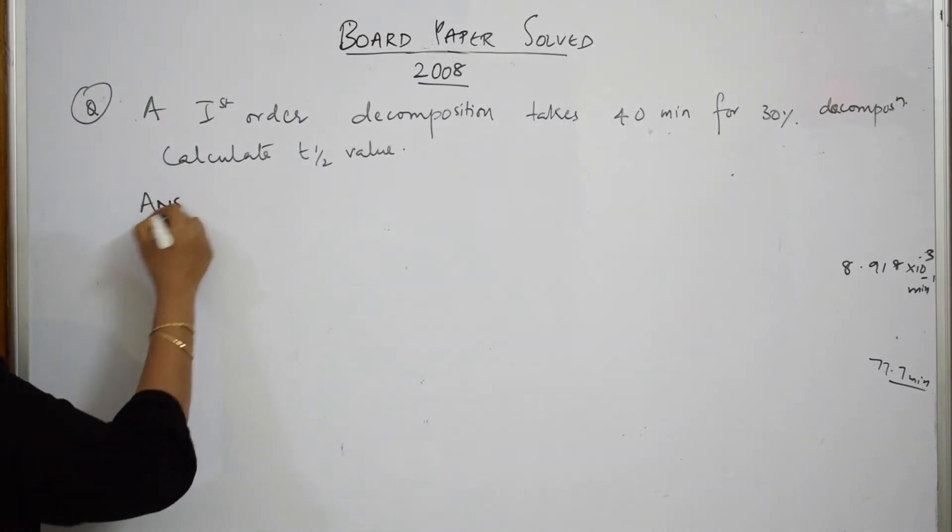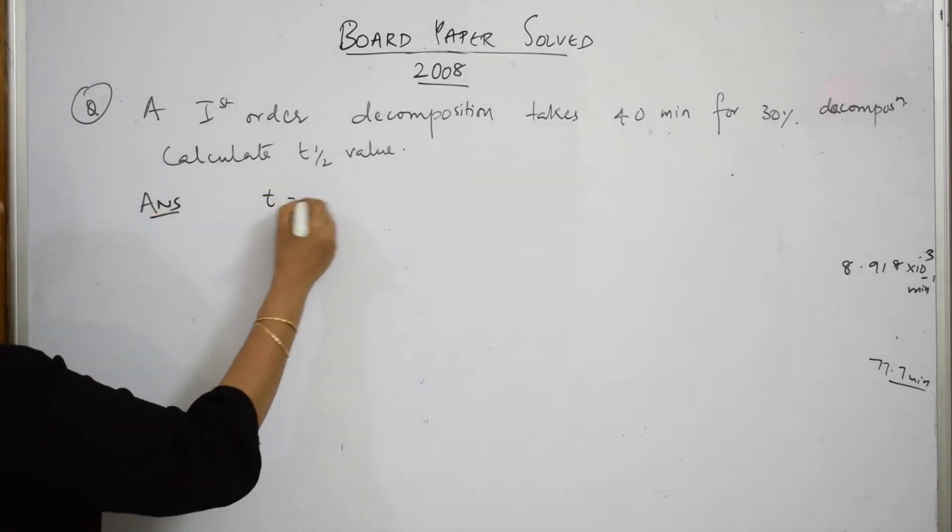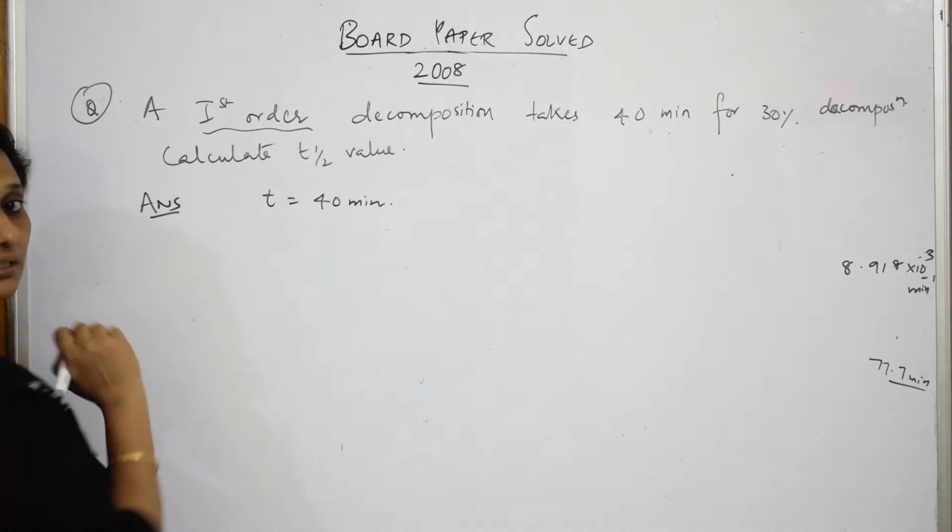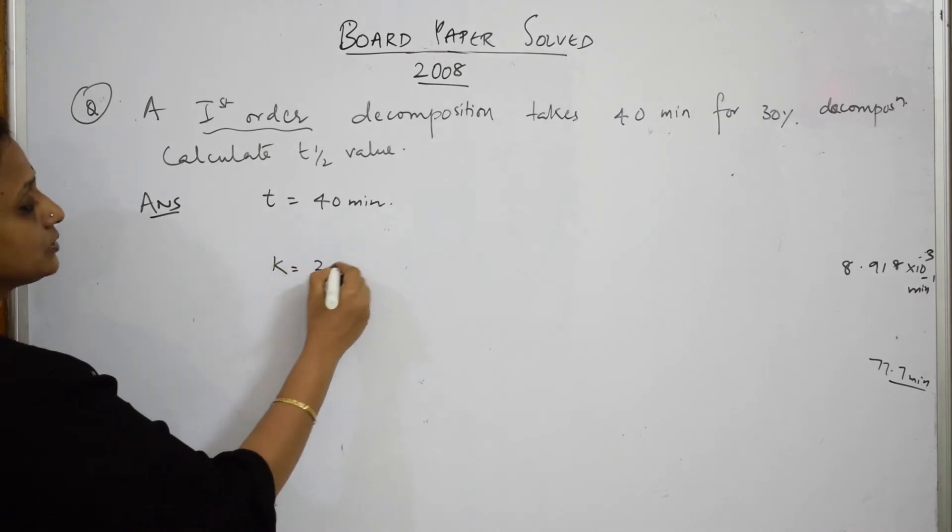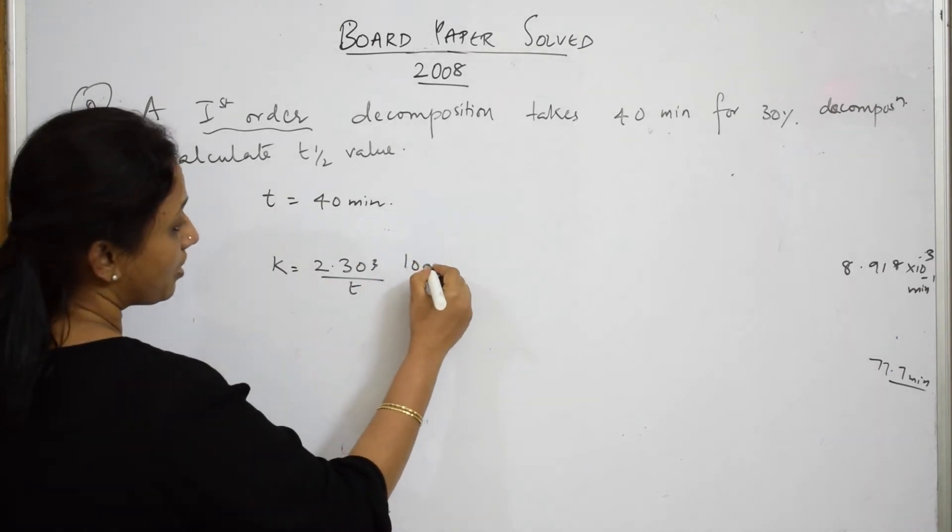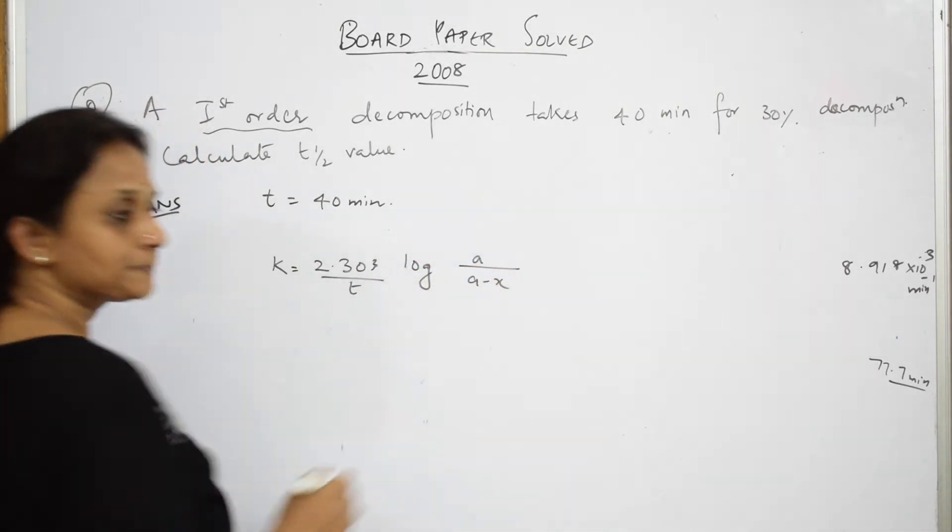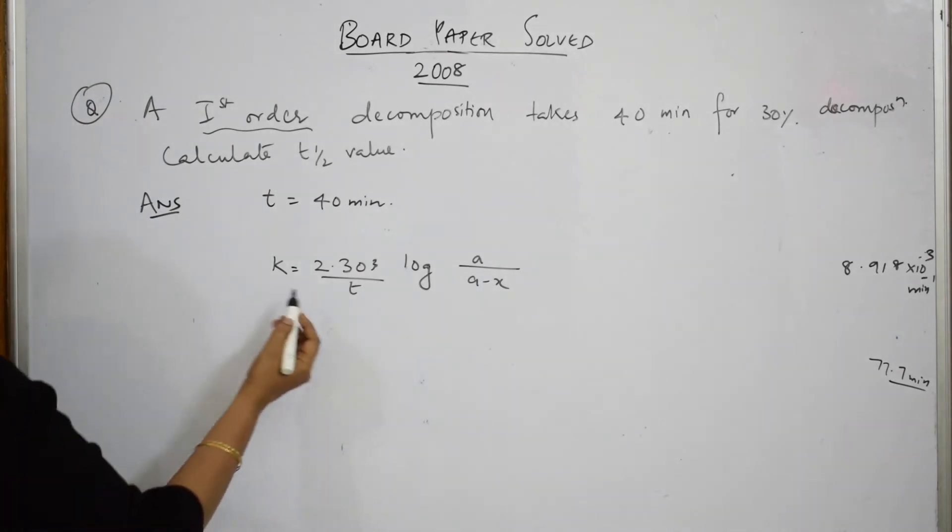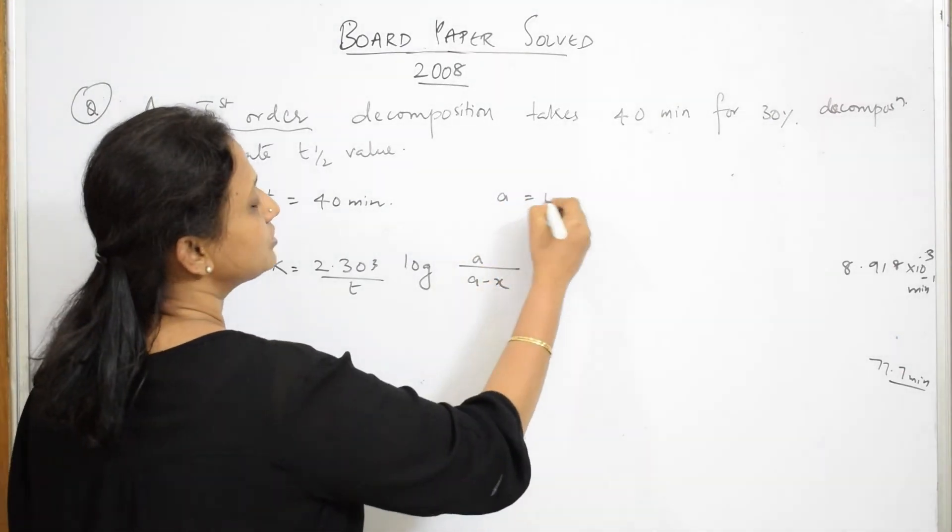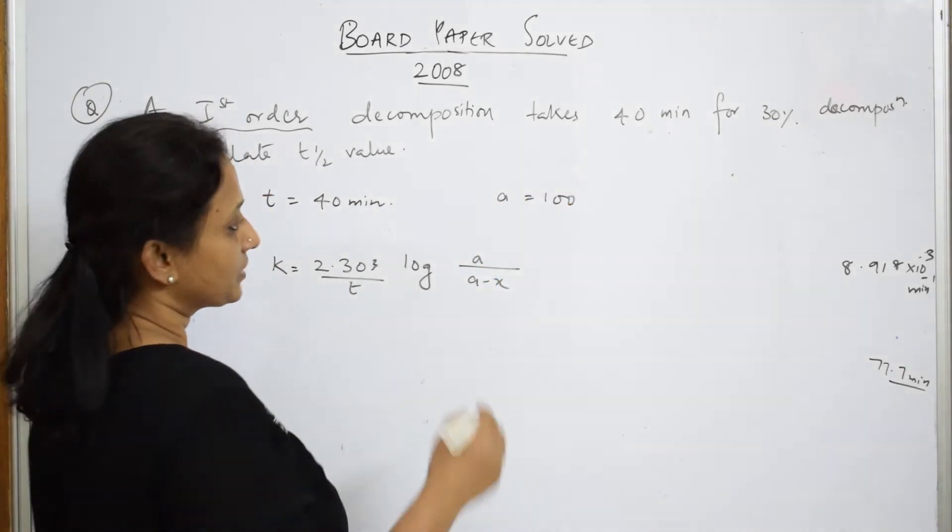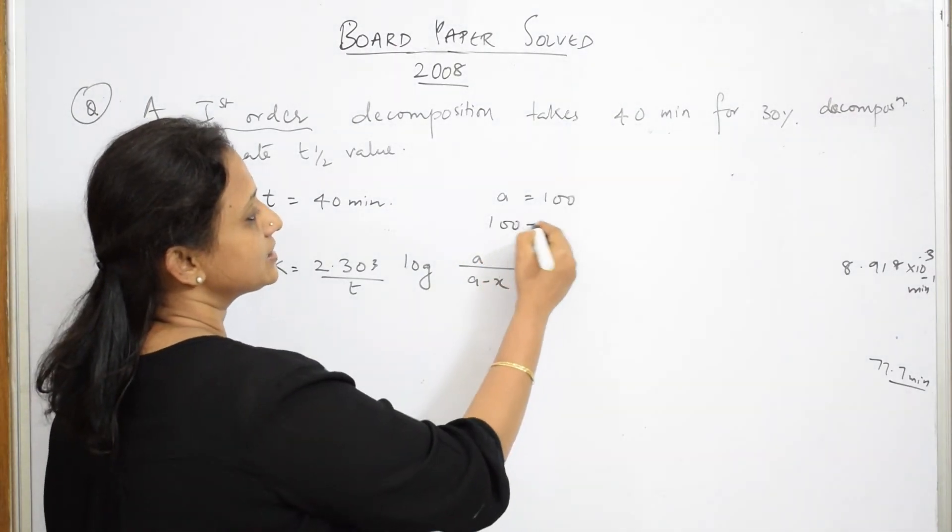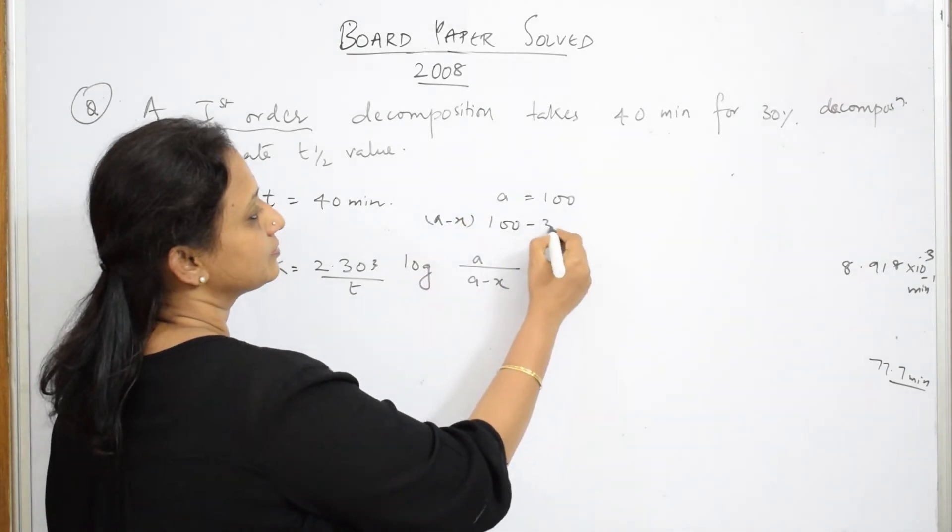Let us write the data given to us. First, t is equal to 40 minutes. They have given us first order decomposition, so write the formula: k is equal to 2.303 by t log a by a minus x. Now, a, the initial concentration, is equal to 100 percent, and your left over percentage, a minus x, becomes 70 percent.